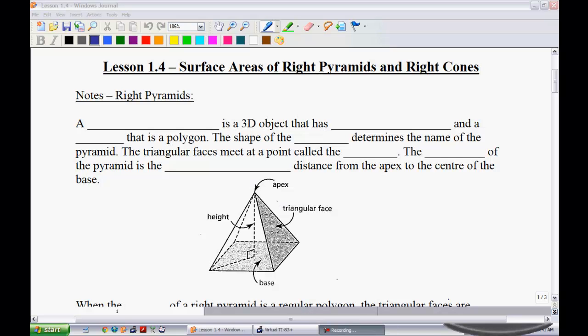All right, lesson 1.4, surface areas of right pyramids and right cones. We move into a different phase in this course. We're going to deal with more volume and surface area. We've had some experience dealing with this, probably not specifically with pyramids, so this will be a little bit different, cones as well. Let's get started. First we're going to talk about right pyramids, and then at the end of the lesson we'll move into the cones portion.